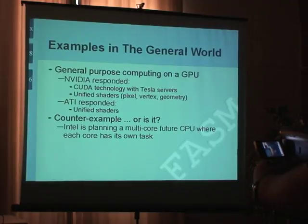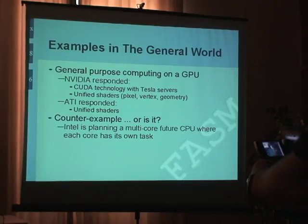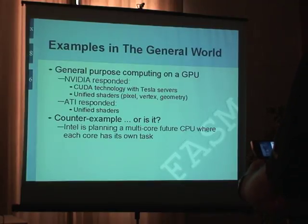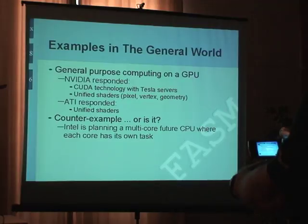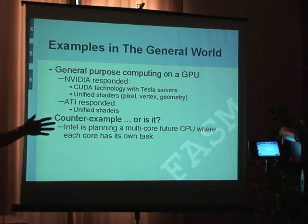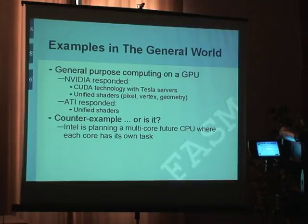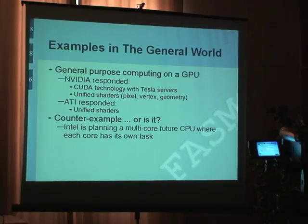There have been some examples of general purpose computing on a GPU — using graphical processing units to calculate mathematics not even related to 3D or even 2D. NVIDIA has got CUDA technology and even produced Tesla servers with that. And there are unified shaders — there were pixel, vertex, and geometry shaders before, and now they're all unified with the latest architecture.